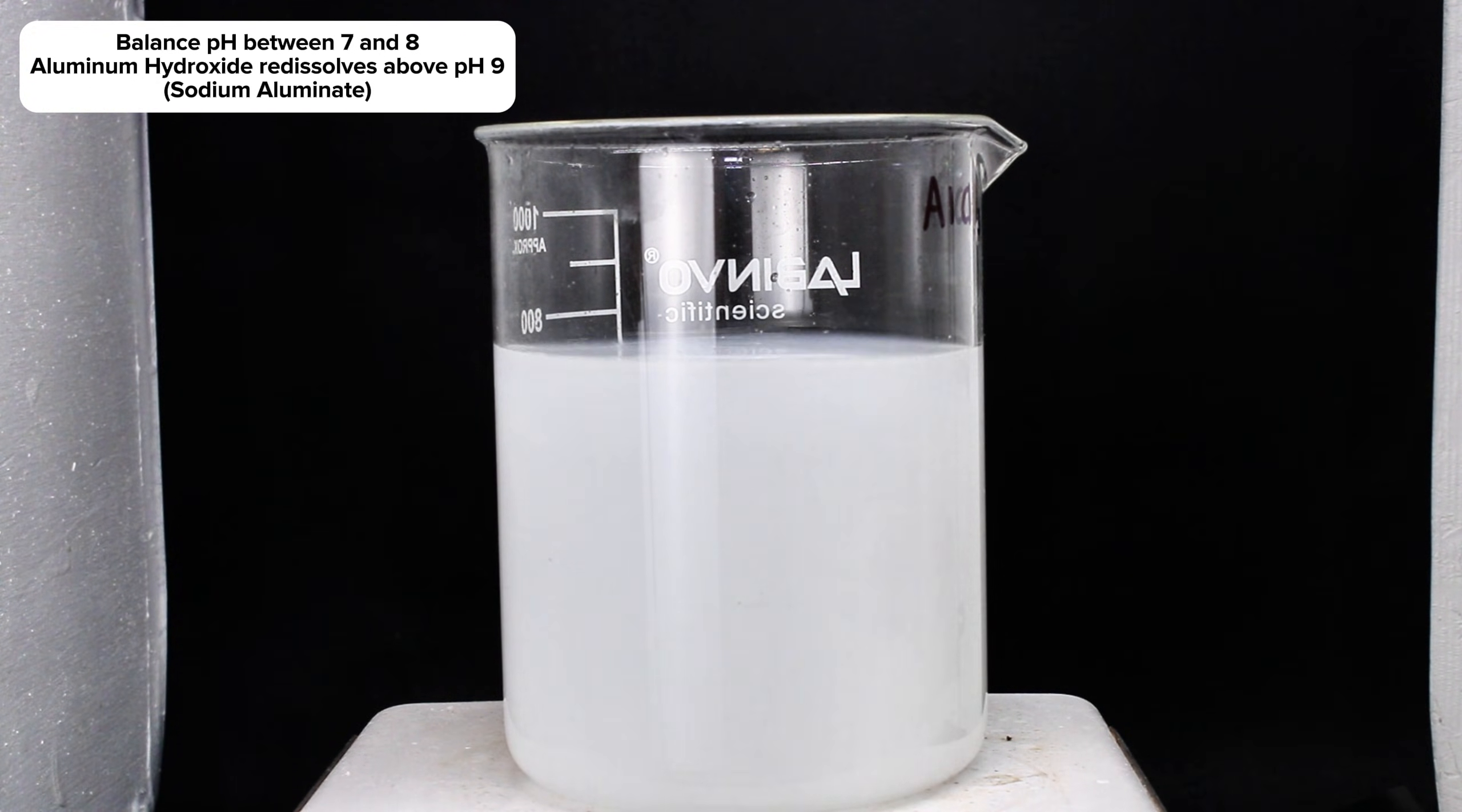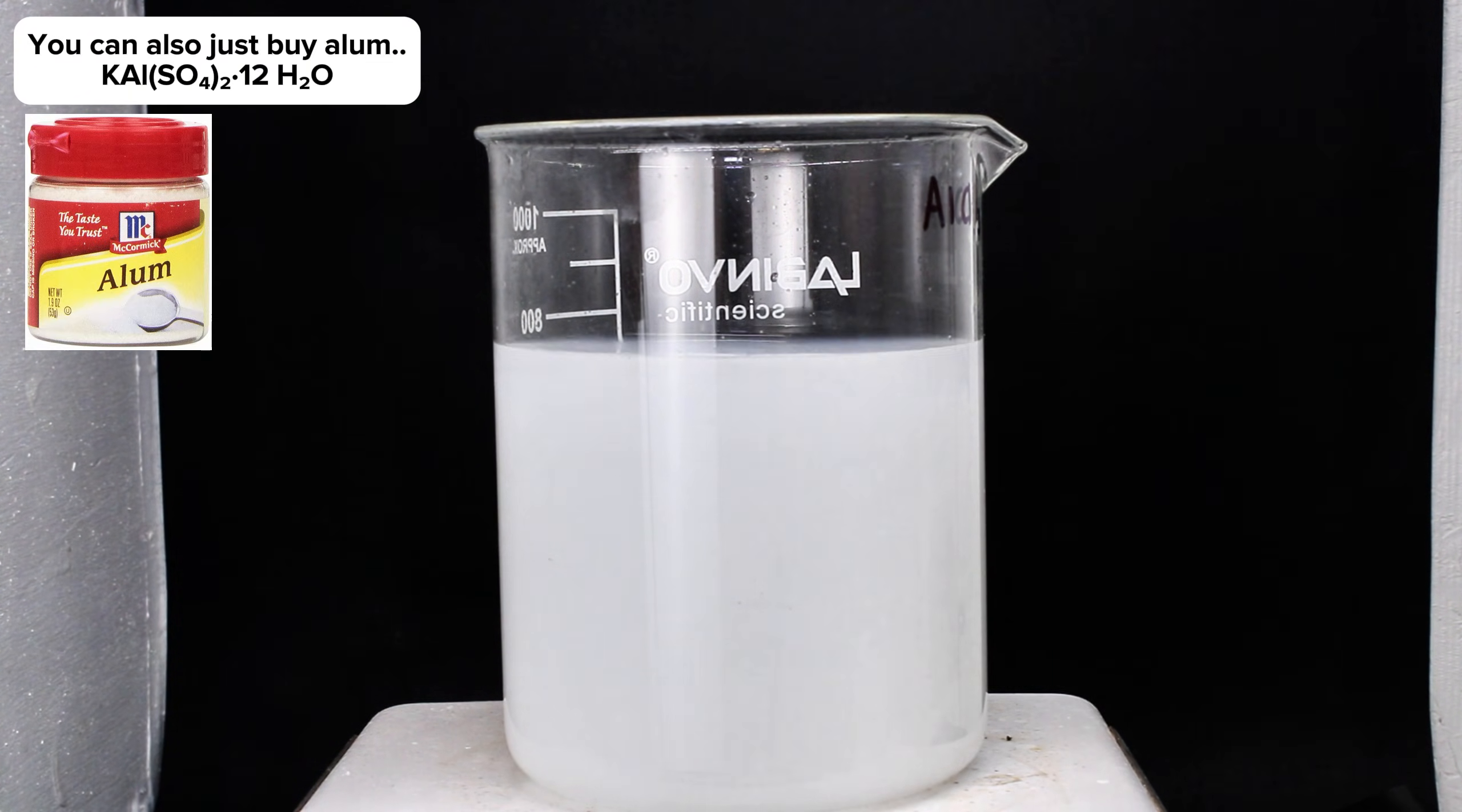As a side note, a super easy source of soluble aluminum is alum, which is available at most grocery stores near the spices.